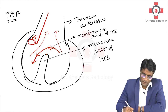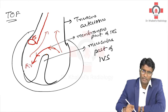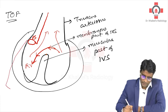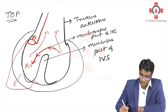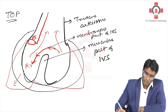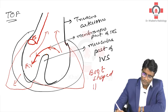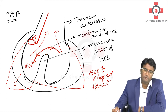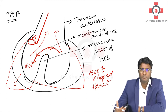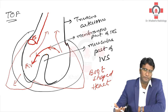Over a period of time, the right ventricle will enlarge, and that enlargement of the right ventricle will produce the heel of the boot, producing a boot-shaped heart. Boot-shaped heart is a feature of Tetralogy of Fallot. The last thing to develop in the Tetralogy is right ventricular hypertrophy.